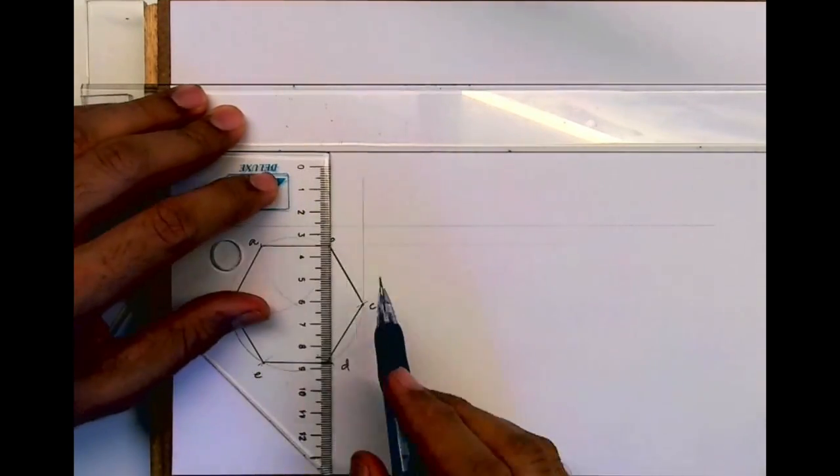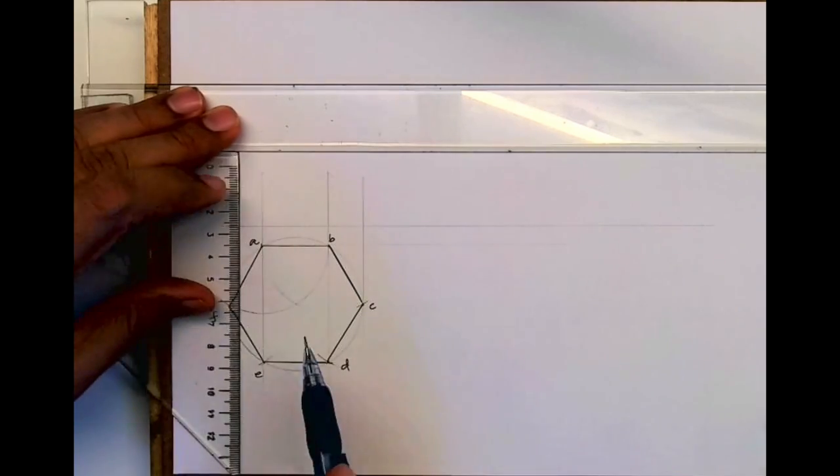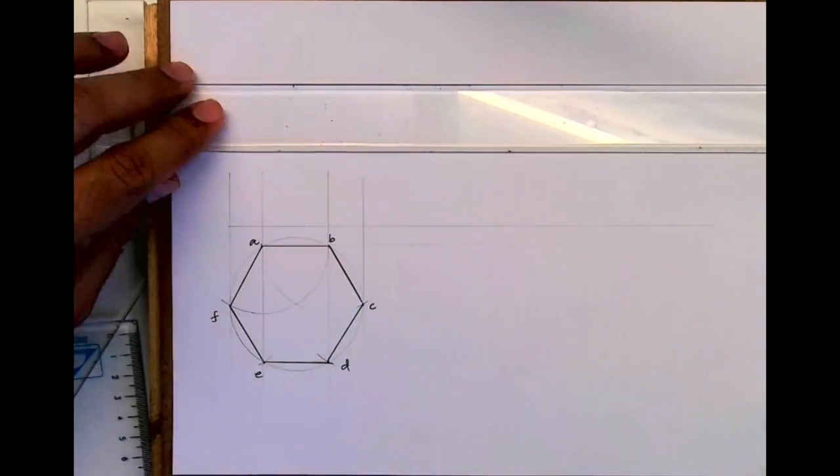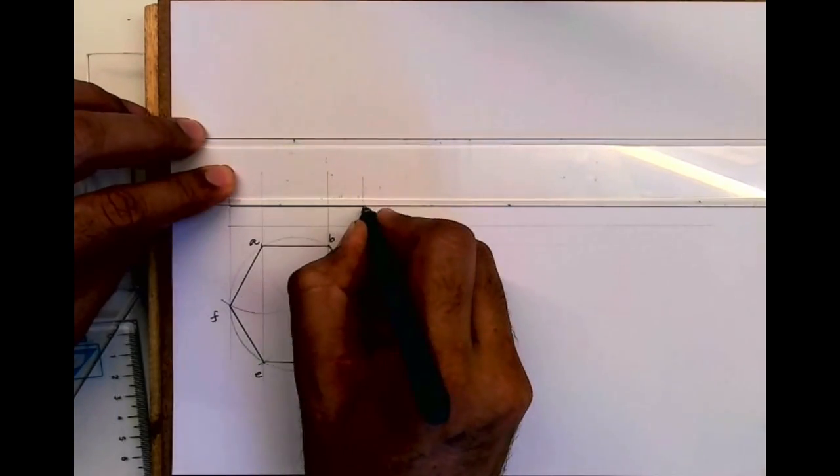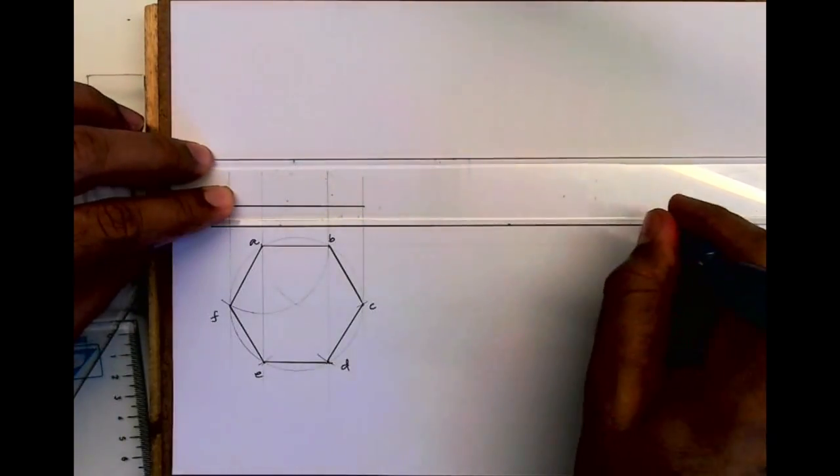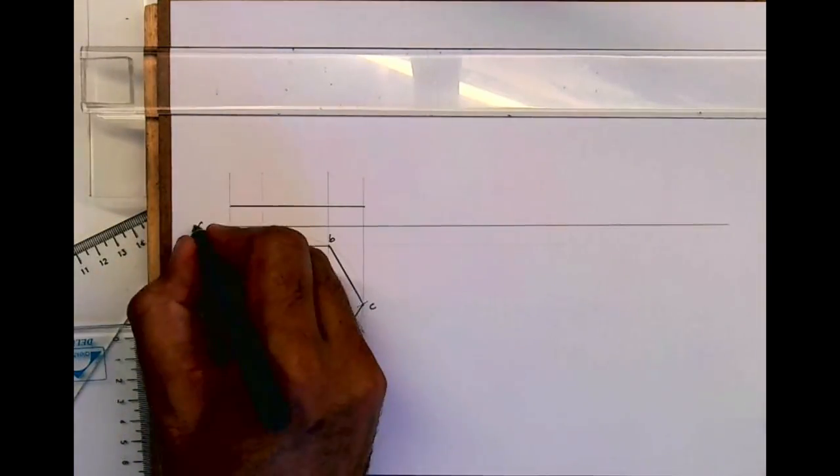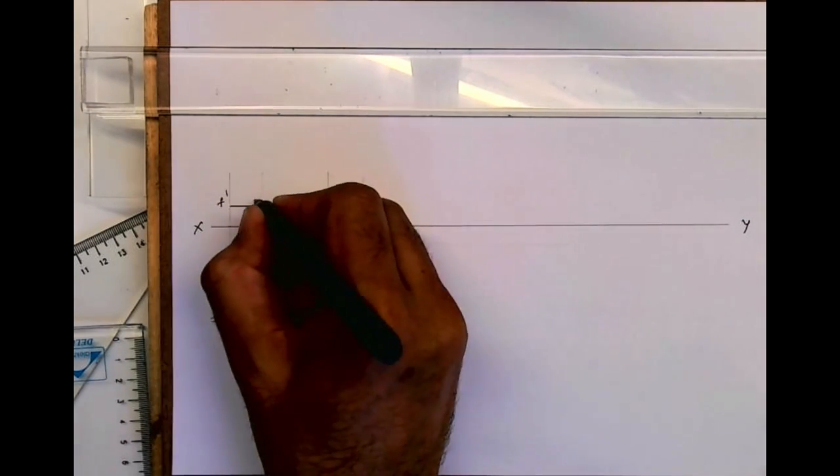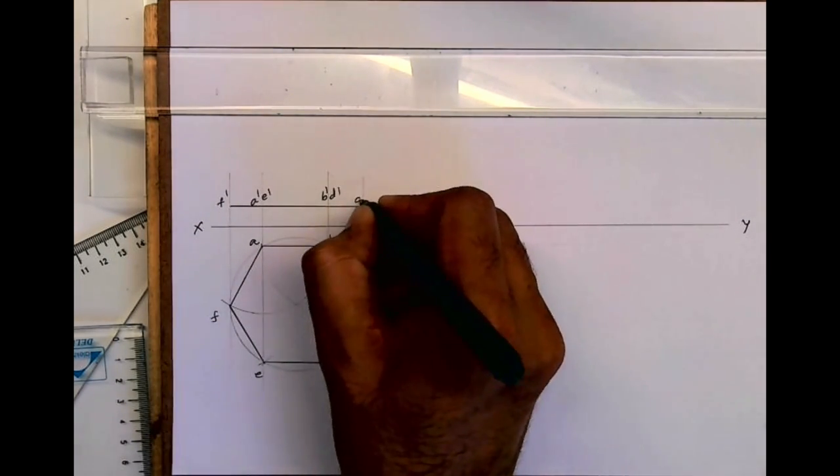You can take any distance and mark with dashed lines. We're done with the reference front view and top view.